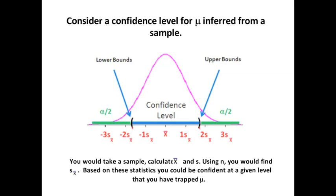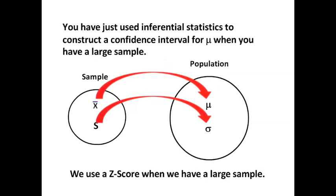Now, what we've done is just developed a confidence interval in which we have trapped mu. Now you've just done inferential statistics, and what I've done is shown you how to catch an x-bar and an s and predict mu and sigma. And we use a z-score when we have a large sample.